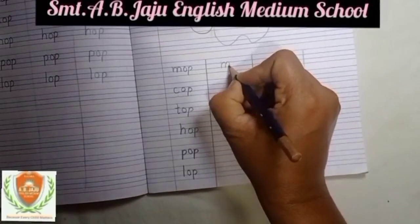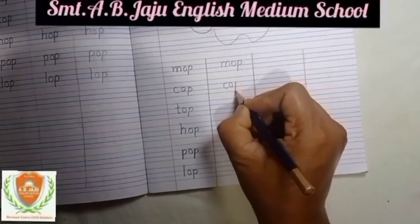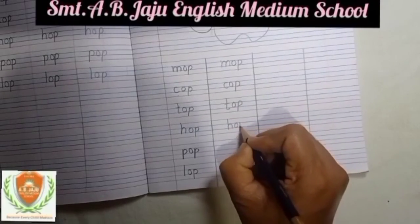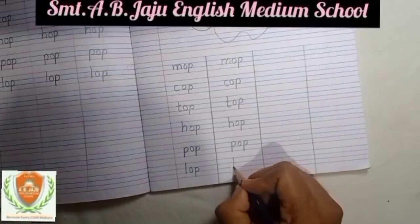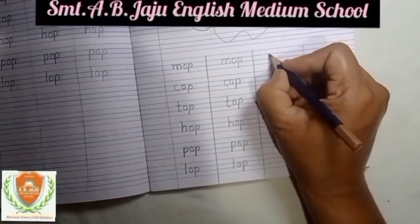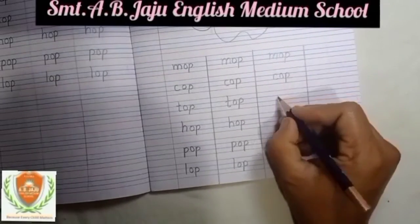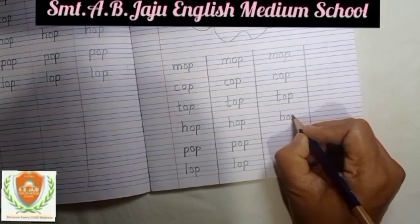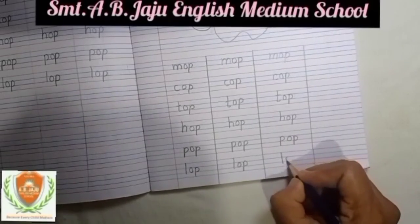Now again we will write. M-O-P, mop. C-O-P, cop. T-O-P, top. H-O-P, hop. P-O-P, pop. L-O-P, lop. Like this you have to read the spellings and say the words: M-O-P, mop. C-O-P, cop. T-O-P, top. H-O-P, hop. P-O-P, pop. L-O-P, lop.